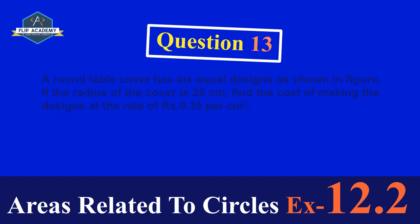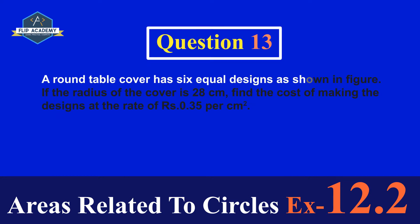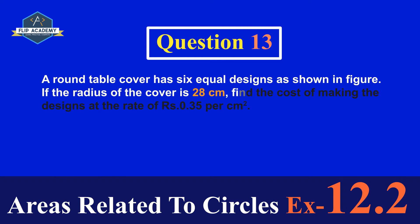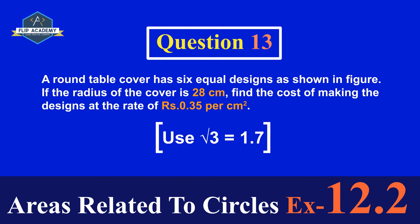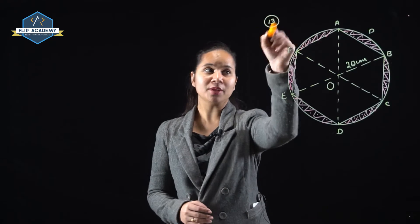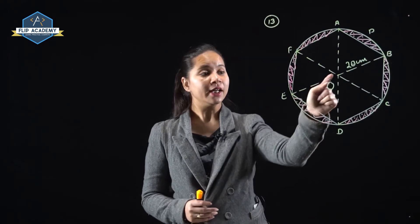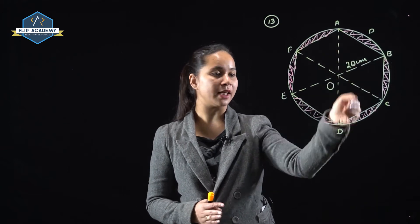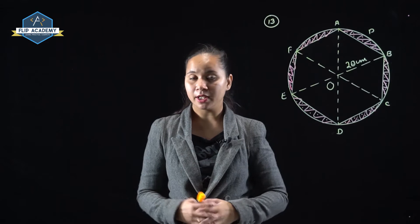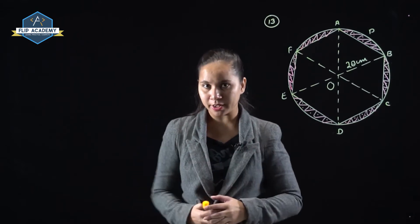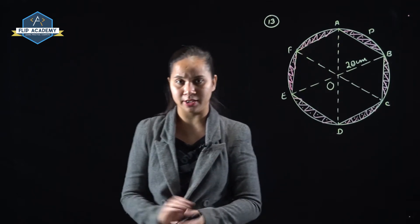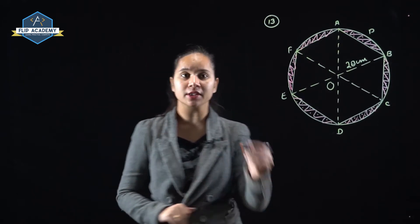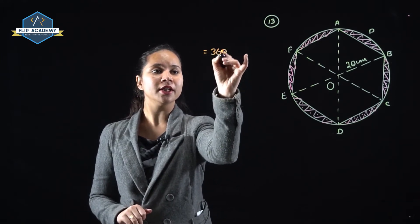Areas related to circles, Exercise 12.2, Question No. 13. A round table cover has 6 equal designs as shown in the figure. If the radius of the cover is 28 cm, find the cost of making the designs at the rate of Rs. 0.35 per cm². Use √3 = 1.7. Looking at the figure, the center is O and all parts are segments of the circle. Consider APB as a segment. Each segment subtends an angle of 360° ÷ 6 at the center, because the center makes 360° total divided into 6 equal parts.